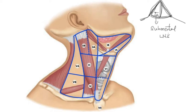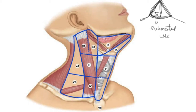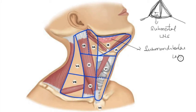The boundaries of Level 1A are: anteriorly the anterior belly of the digastric, the midline, and the hyoid. Coming to Level 1B: you have the anterior belly of the digastric, the posterior belly of the digastric, and the lateral aspect of the mandible. This triangle is the submandibular triangle, containing the submandibular lymph nodes as well as the submandibular gland.